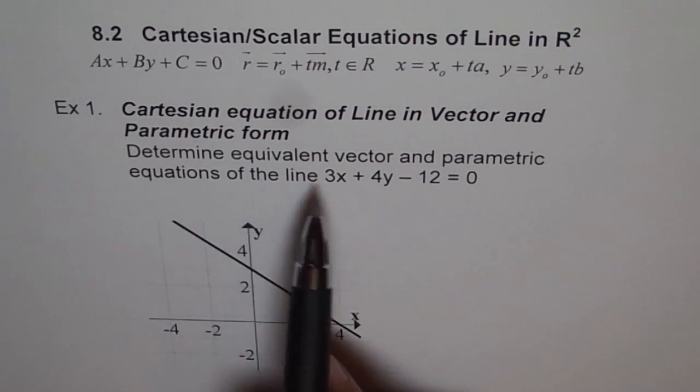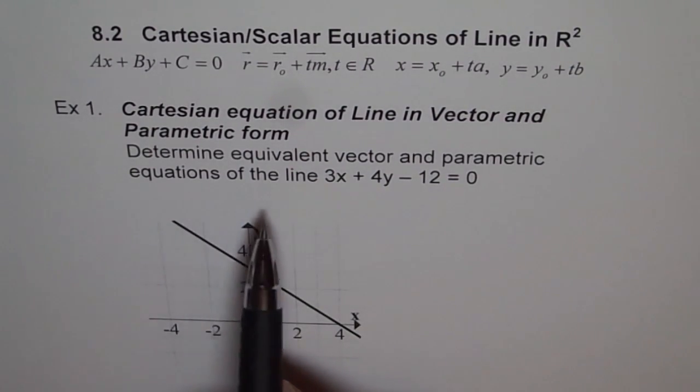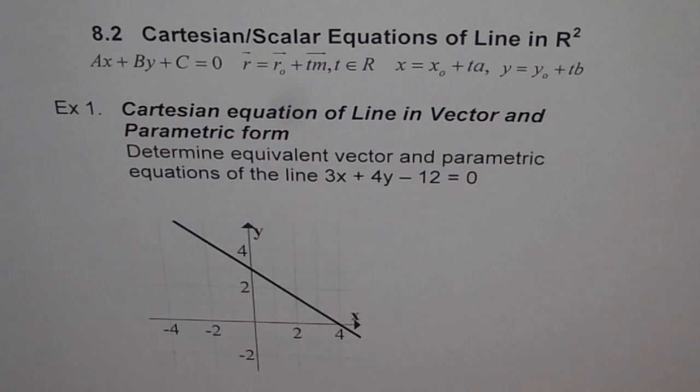Determine equivalent vector and parametric equations of the line 3X plus 4Y minus 12 equals 0. So this Cartesian equation is the same as the standard equation which you did in algebra.